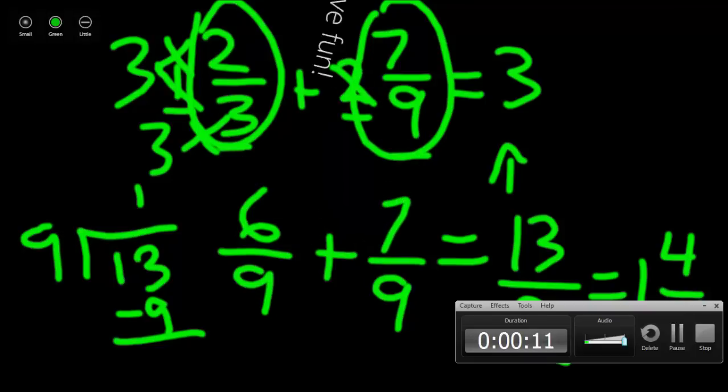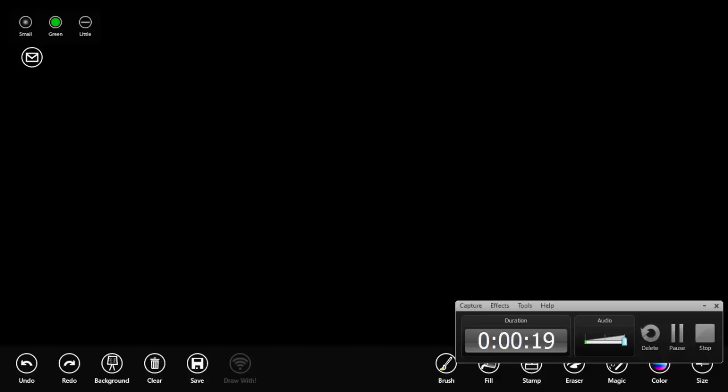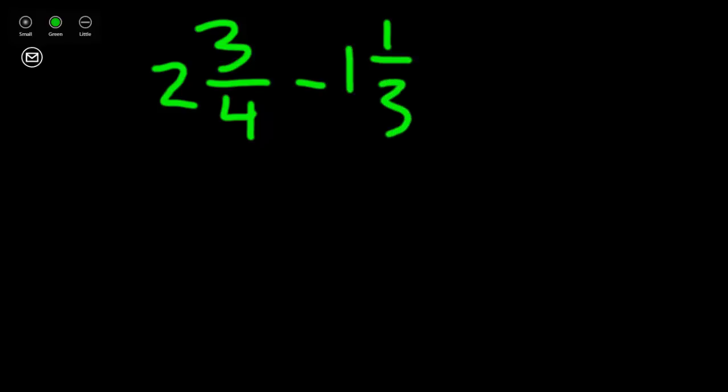In this lesson, we are going to subtract two mixed numbers. The mixed numbers we are going to subtract are two and three-fourths minus one and one-third.